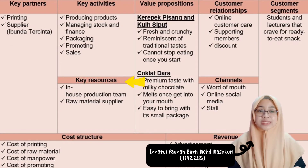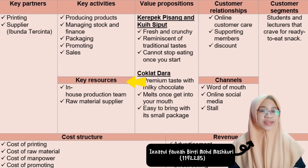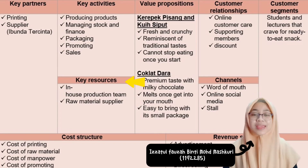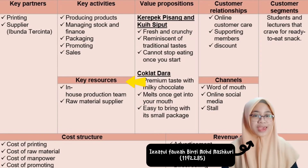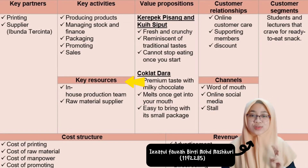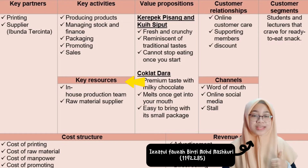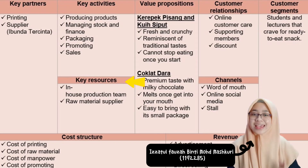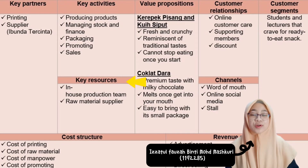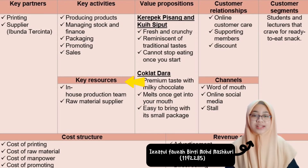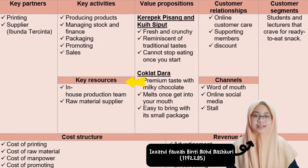Next is the key resources. The key resources are the most important assets in the business model. In homemade darah, we have two key resources: first, an in-house production team; and second, raw material suppliers such as Giant, Lotus, and others.